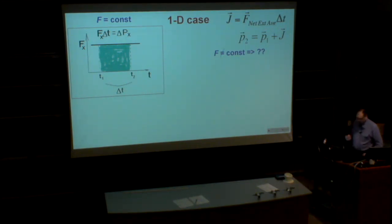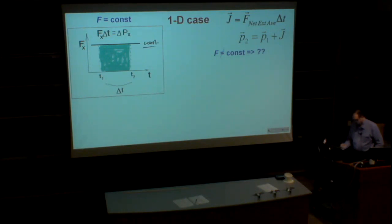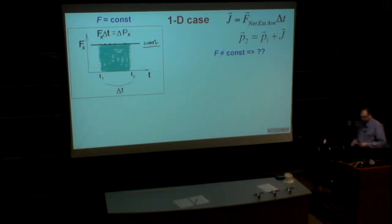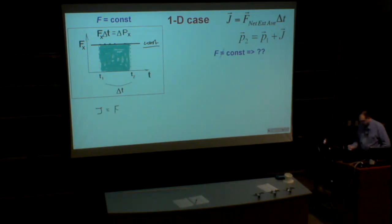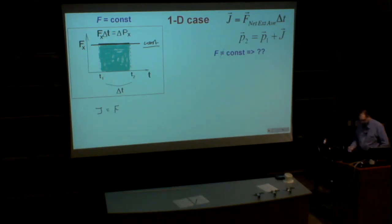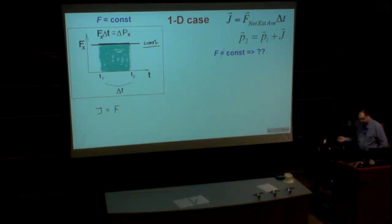On the left we see a picture of constant force — the same at this instant and the same at this instant. So in this situation, if we want to calculate the impulse, we just multiply this value of the force. Because when the force is constant, the actual value and the average value of the force are the same thing.